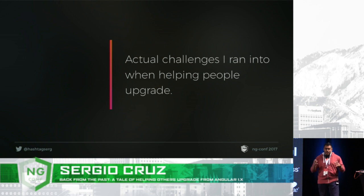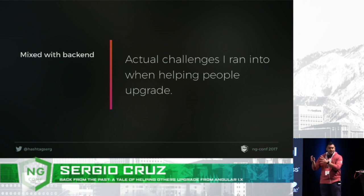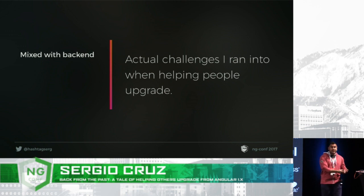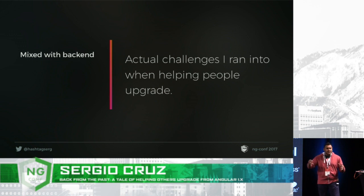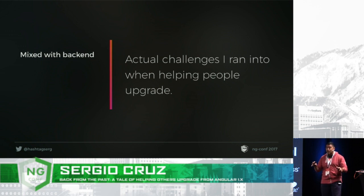Let's talk about some actual challenges I ran into when helping people upgrade. The first thing that came up a lot was code that was mixed with server-side code. What I'm talking about is perhaps you have a Ruby on Rails app and you're running AngularJS at the same time. For AngularJS that's mostly okay, but now if you want to start talking about the whole modern set of tools, it requires a lot of configuration files to get going — for testing, for your Webpack config, for example. And then you start having some competing priorities on the code base.